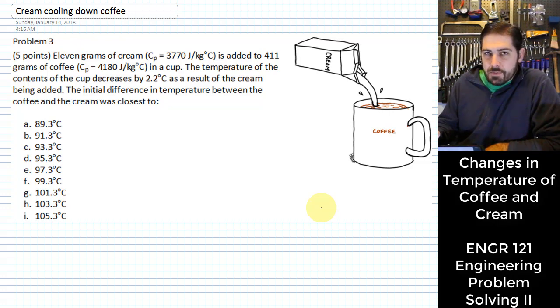With this problem, we have 11 grams of cream that's going to be added to 411 grams of coffee. We are given that the coffee that was in the cup decreases by 2.2 degrees C.